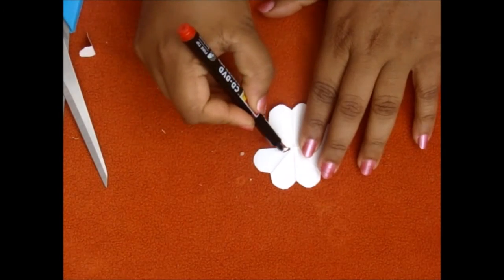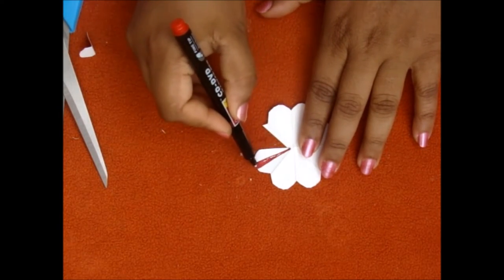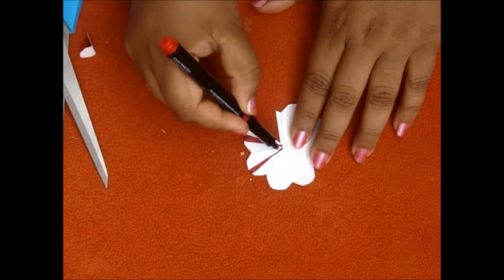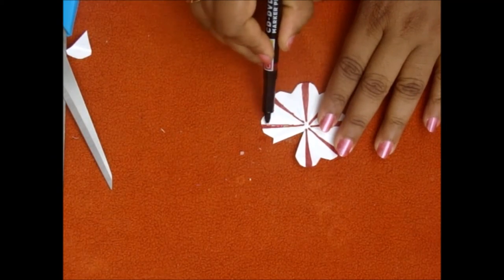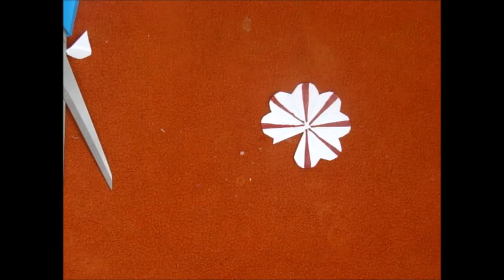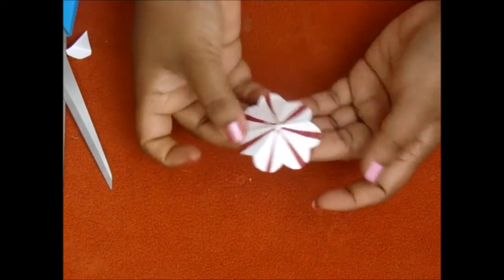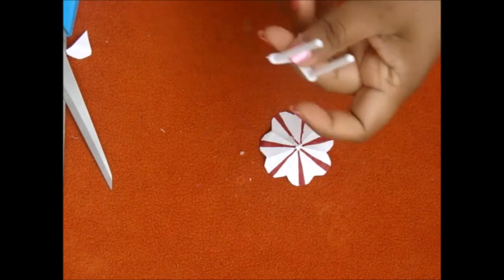With the help of marker I am creating a pattern little wider at the bottom for the umbrella. Complete it. This will add color. With the help of glue gun attach the petal. And your umbrella's top is ready.